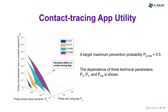Here we illustrate an example of fundamental challenges in a multi-dimensional plane between various sources of uncertainty in using an automated wireless contact tracing application through a wearable device. A target maximum prevention probability of 50% and the 3D surface plots show the dependence on three technical parameters: user adoption, cloud connectivity, and misdetection probabilities. Each surface corresponds to a specific value of PI.